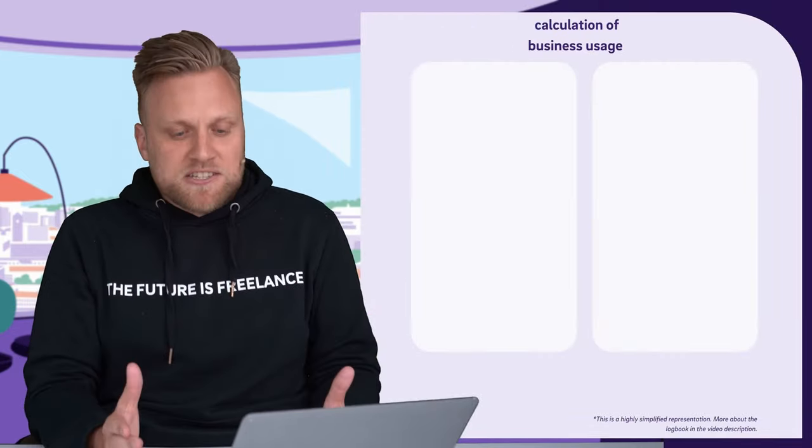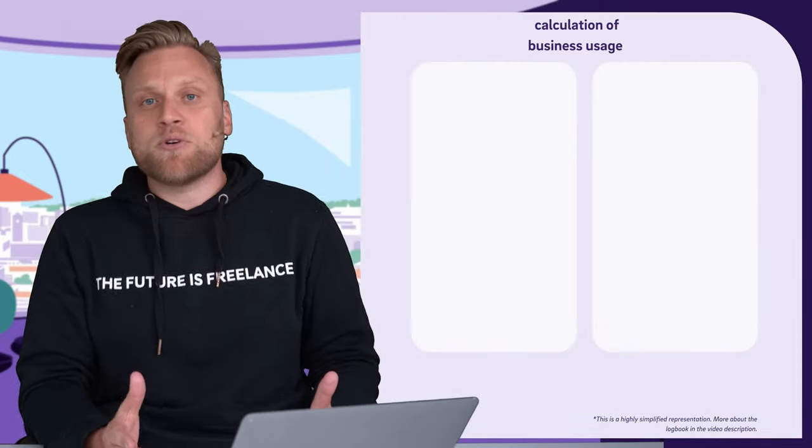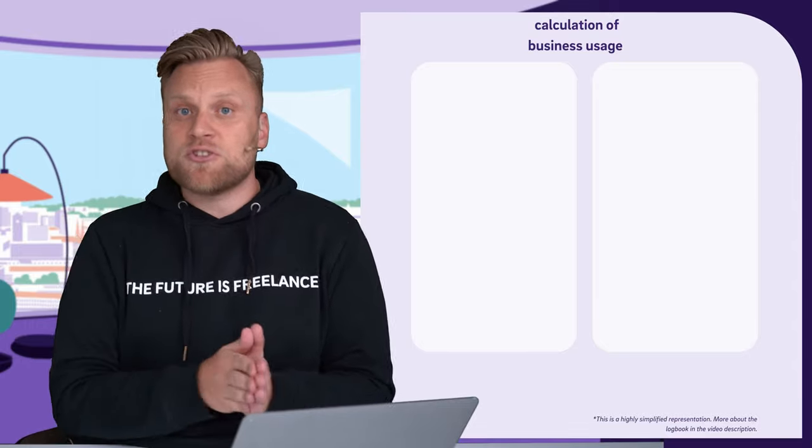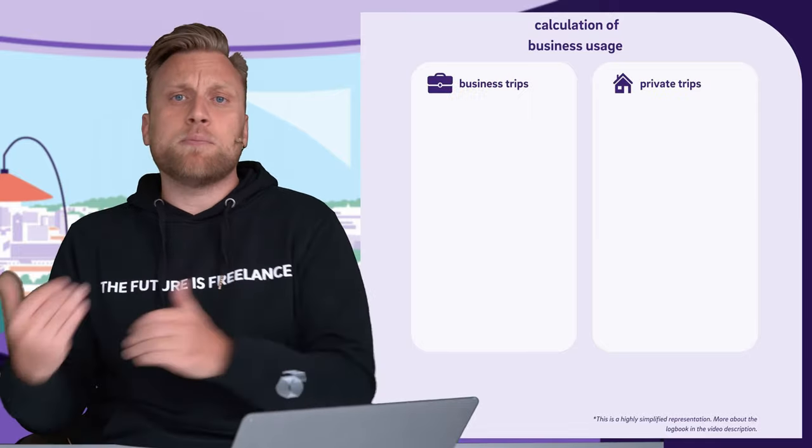However, you can't completely choose whether to buy the car as a private vehicle or as a company car. This depends on how large the percentage of business use is. This means you first need to calculate the percentage of business use, and for that you need to keep a logbook for a representative period and record whether your trips are for business or private purposes.